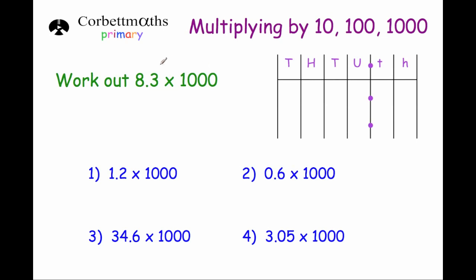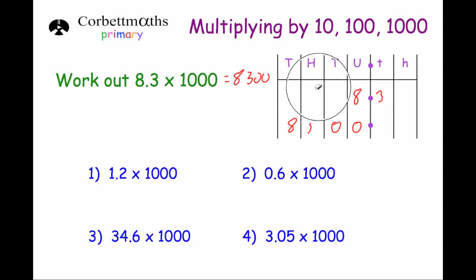Finally, let's look at what happens when you multiply decimal numbers by 1000. Take 8.3 multiplied by 1000 — each digit gets 1000 times larger, which is the same as moving three columns to the left. The 8 moves three columns to the left to become 8000, and the three tenths move three columns to the left into the hundreds column. We put in zeros as placeholders, so the answer is 8,300.